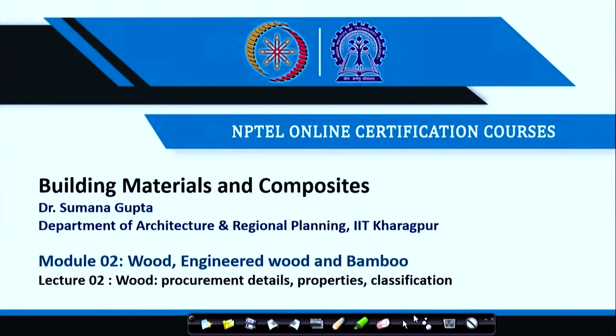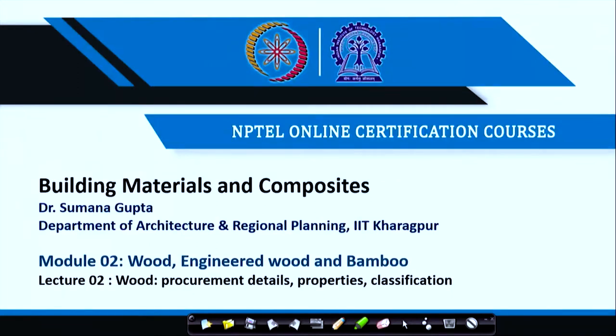In the previous lecture, we had just started module 2, which is on wood and engineered wood and bamboo. In the first lecture, we started with wood and covered the classification and how we get wood — the stages from getting it from the tree to how we use it for our purpose. Here, we will go into further details, covering procurement details, properties of wood, and the commercial classification — not the types of trees, but how timbers are commercially classified.